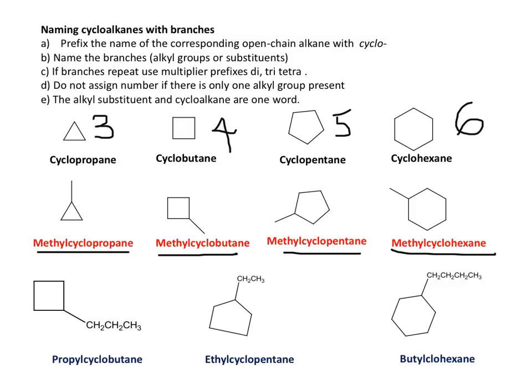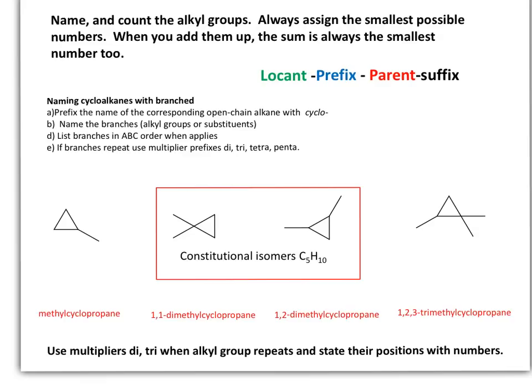We have the structure in both cases — one is only showing skeletal, and this one is showing the alkyl substituent with the condensed formula. This one is butylcyclohexane, ethylcyclopentane, and propylcyclobutane.